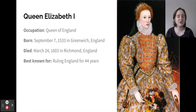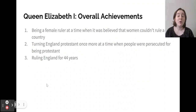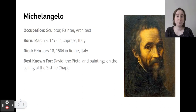The first person we're starting with is Queen Elizabeth I. Her occupation was Queen of England. She was born September 7th, 1533 in Greenwich, England, and she died March 24th, 1603 in Richmond, England. She was best known for ruling England for 44 years. Her overall achievements include being a female ruler at a time when it was believed women couldn't rule a country, turning England Protestant once more at a time when people were persecuted for being Protestant, and ruling England for 44 years. That's all you're going to write about Queen Elizabeth — we're going through these pretty quickly.